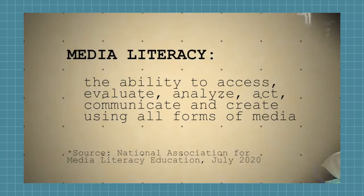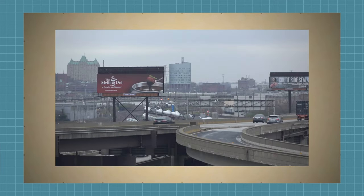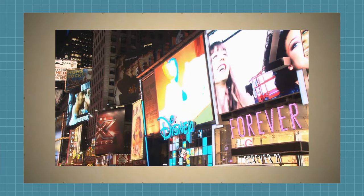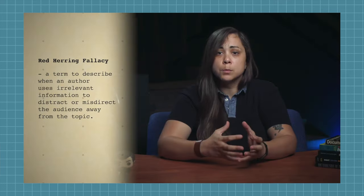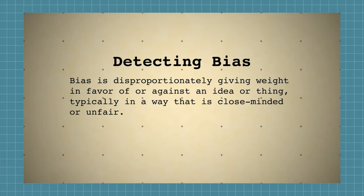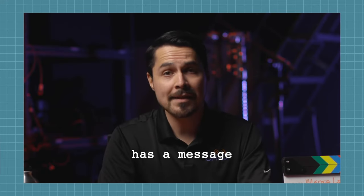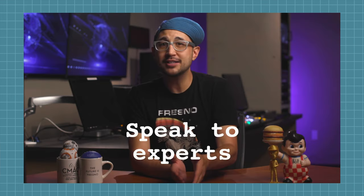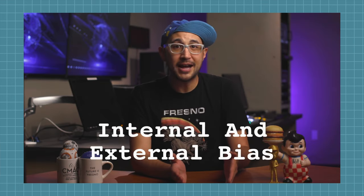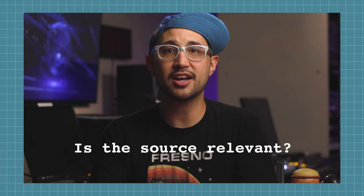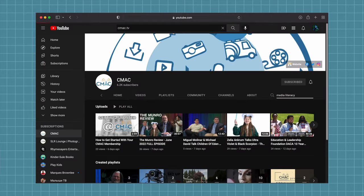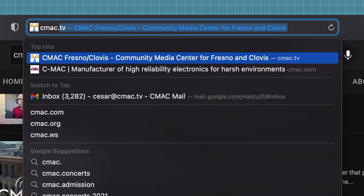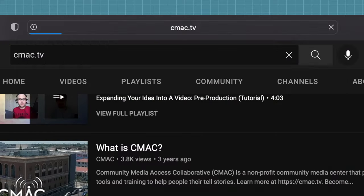Hey everyone, I'm Natalie from CMAC and we're back with another video on media literacy. In our first few videos, we defined media literacy and discussed why it's important for us to become critical thinkers about the media we interact with. Lisa showed us how to fact check sources and recognize bias. Johnny explained the responsibility of media creators to be mindful of the media messages we publish or post. And Kyle provided tips and tricks for ethically framing our media message when creating content. You can watch those videos anytime on our YouTube channel or on our website at cmac.tv slash media literacy.